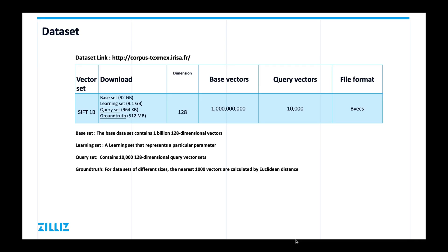For this test we will be using a SIFT1B dataset which contains four files. The base set is a dataset of 1,128,000-dimensional vectors. The learning set is a set with specific parameters. The query set is a set of 10,128-dimensional query vectors. And the ground truth contains 1,000 most similar vectors for each query in the query vectors.